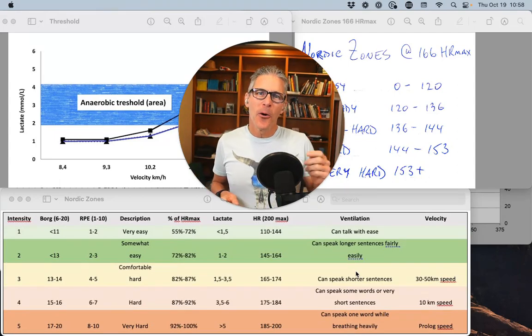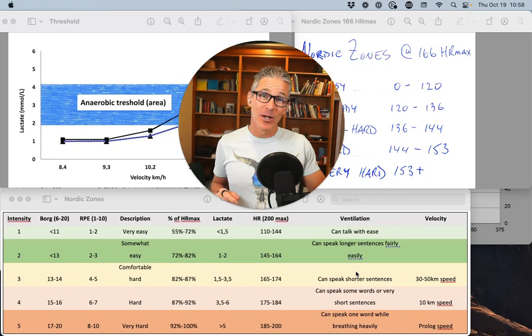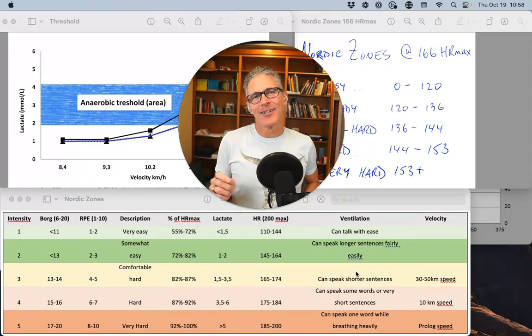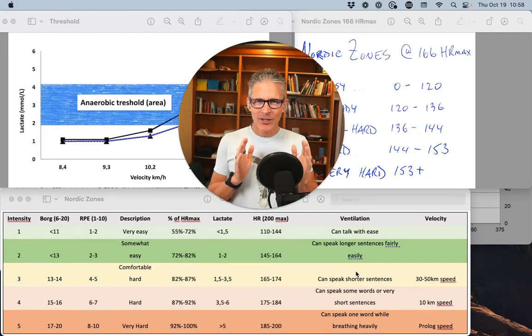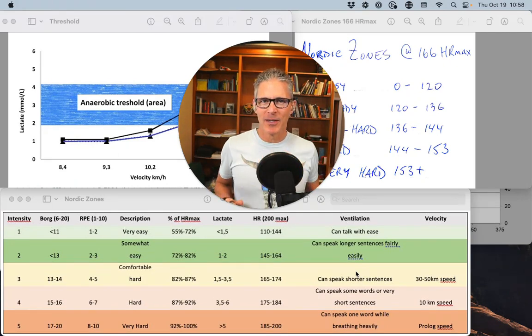So low 3 or high 4 are not exactly, well, it's risky on the high 4. And on zone 2, it's not quite hard enough to get the adaptations you're seeking. So you're better off shooting for the middle.